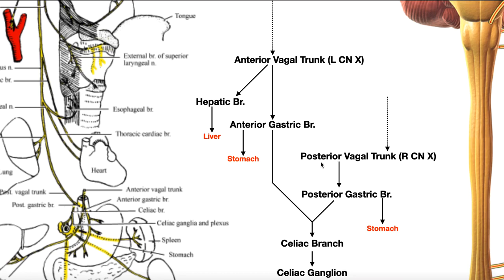The posterior vagal trunk — remember, that was mostly the right vagus nerve, but it does have some contributions from the left — gives off a branch called the posterior gastric branch, which also serves the stomach, just the posterior part of the stomach mostly.